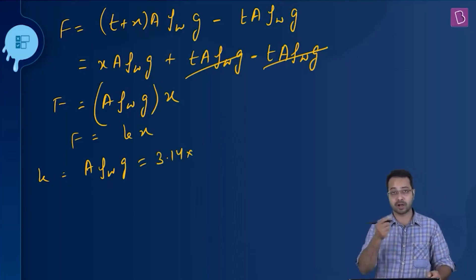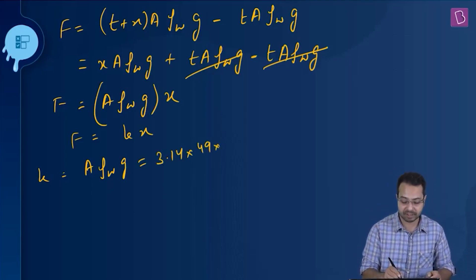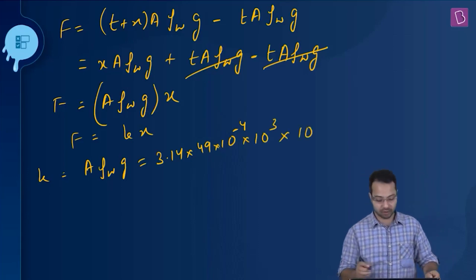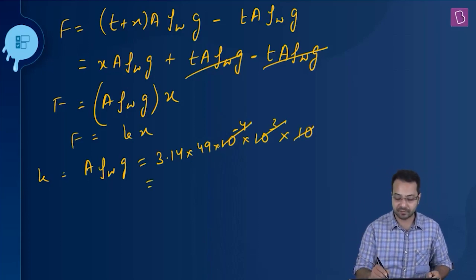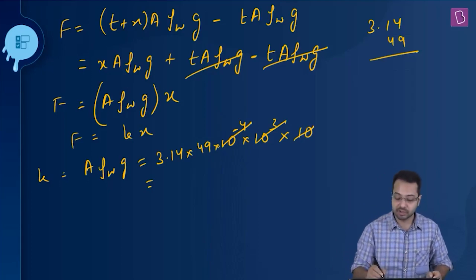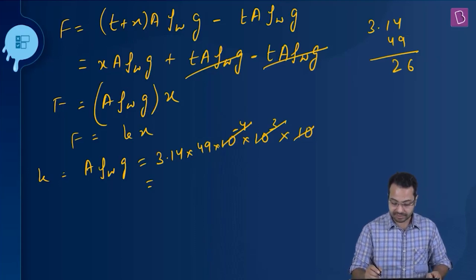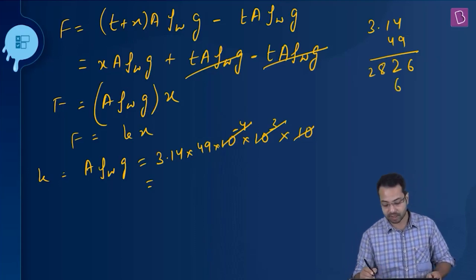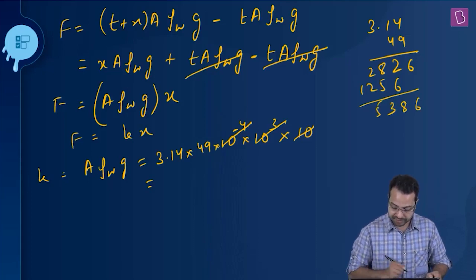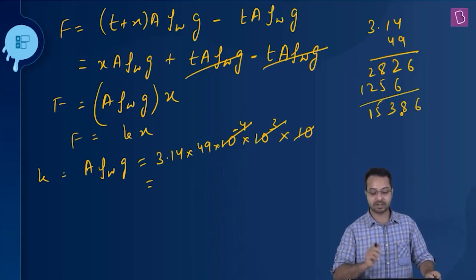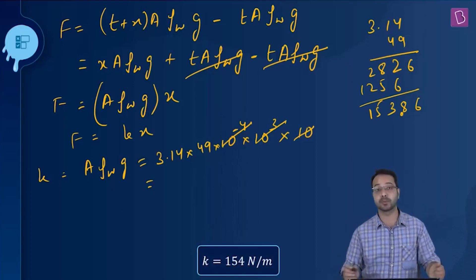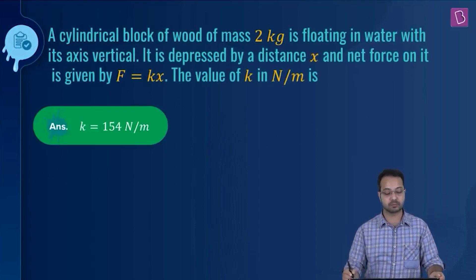Calculating k: A = π × r² = π × (7 cm)² = π × 49 × 10⁻⁴ m². So k = π × 49 × 10⁻⁴ × 10³ × 10 = π × 49. Computing 3.14 × 49 ≈ 153.86 N/m, which we approximate to 154 N/m. That is the final answer for this problem.